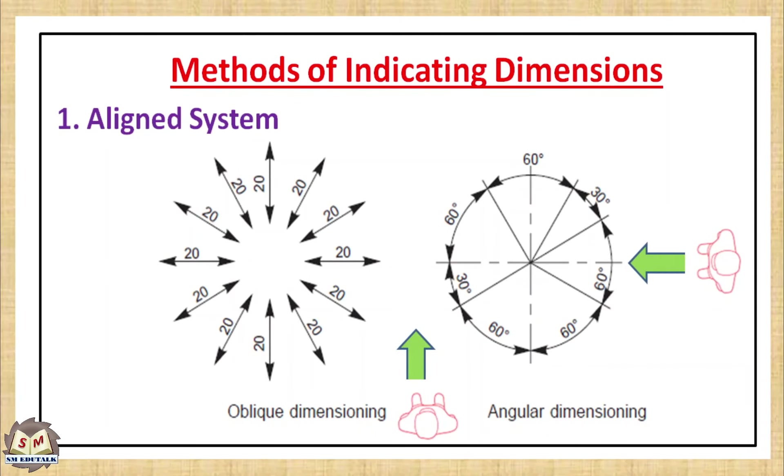Dimension text on oblique or inclined dimension lines should be oriented as shown in figure. Angular dimensions may be oriented as shown in figure. The same viewing rule can be applied - that is either from the bottom or from the right side.